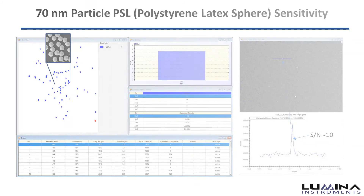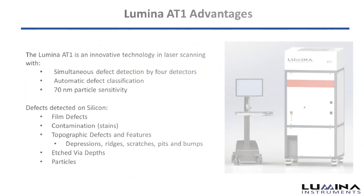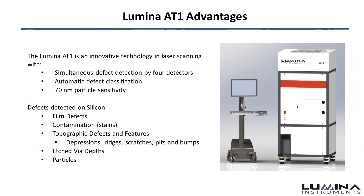In summary, the Lumina AT1 presents an innovative approach in laser scanning, simultaneously detecting defects with the four detectors and automatically classifying them. On silicon, it can detect film defects, contamination, topographic defects and features, etched via depths, and particles.